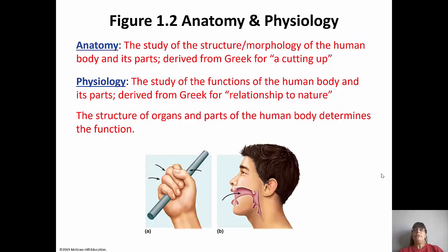It's important to understand the difference between anatomy and physiology. Anatomy studies the structure and morphology of the human body and all of its parts. It actually comes from the Greek word for 'cutting up.' Physiology, on the other hand, studies the function of the human body and its parts. That's derived from the Greek for 'relationship to nature.' So anatomy studies structure and physiology studies function.